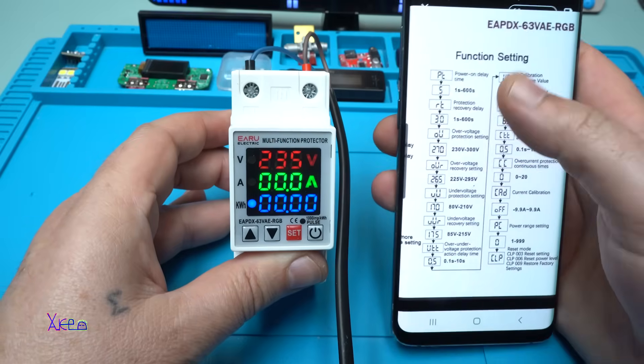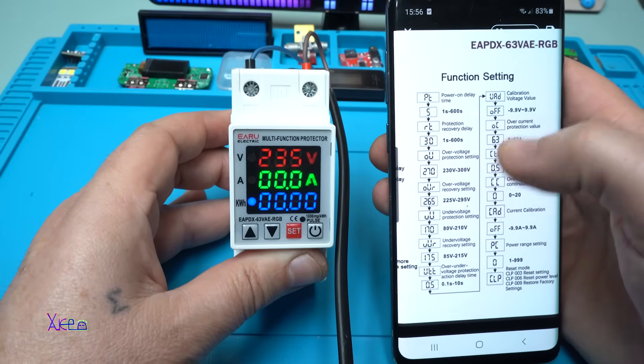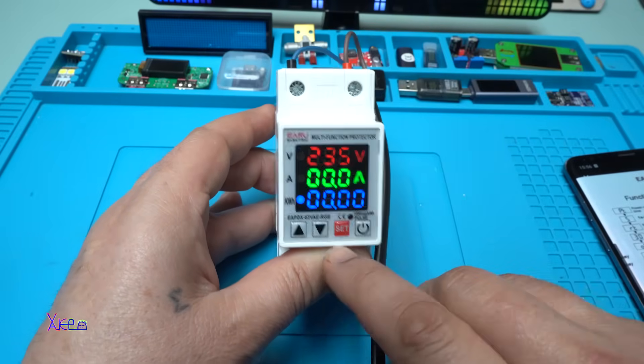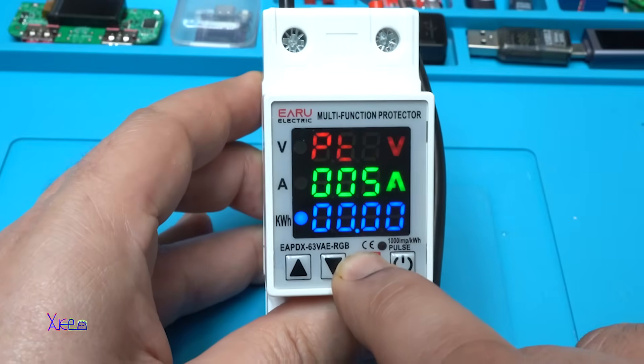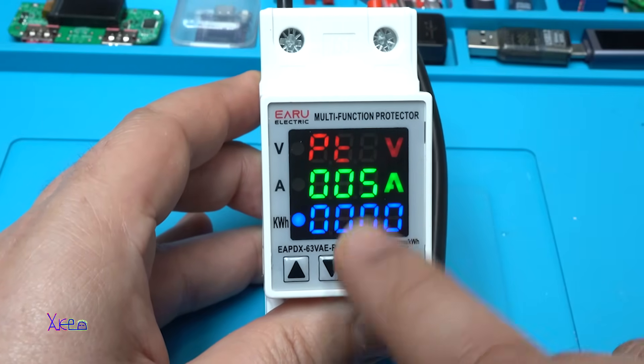So here I have all the symbols for adjusting the voltages, the current, the over protection, everything you need to know. And with holding the set button for, what does it say, three seconds? Okay. We are in.